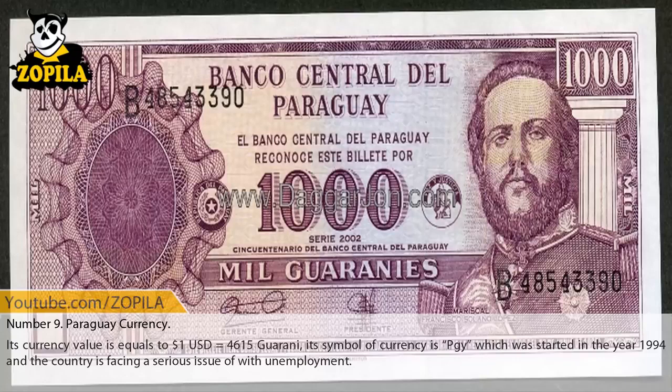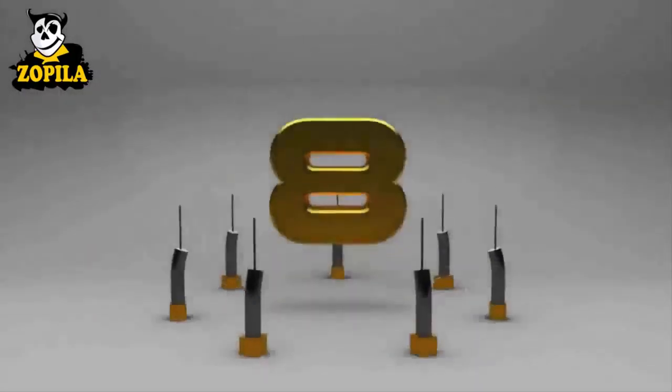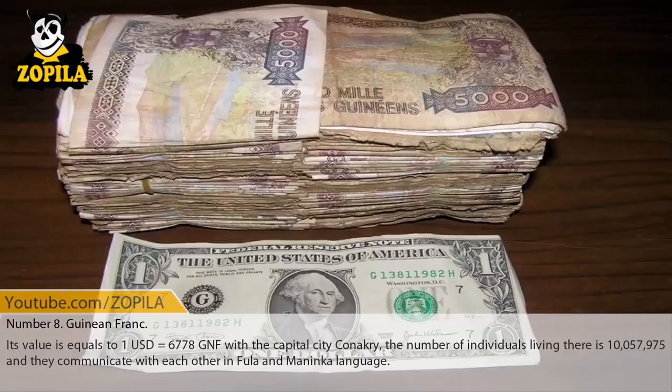Number 9: Paraguay currency. Its currency value is equal to $1 USD equals 4,615 Guaraní. Its symbol is PGY, which was started in the year 1994, and the country is facing a serious issue of unemployment.